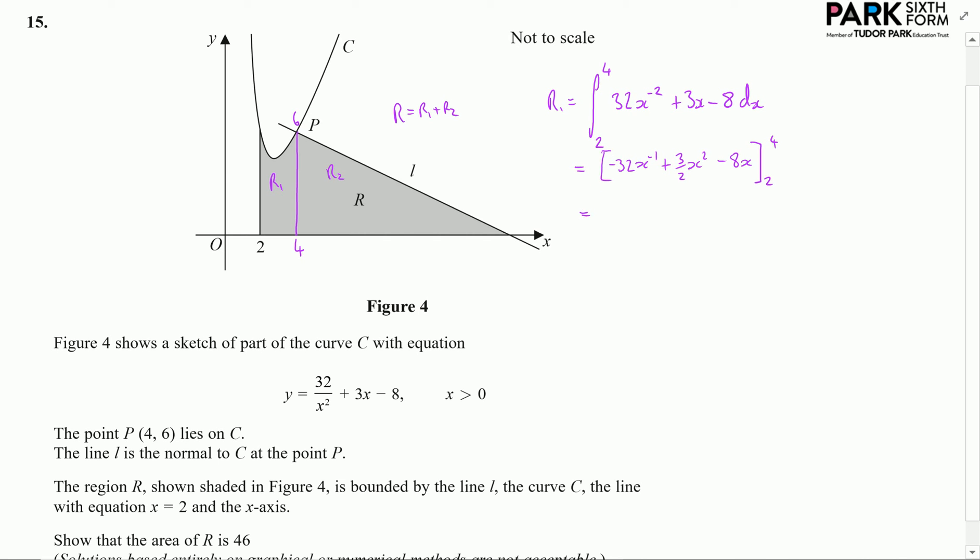So then substitute in these values. That's going to be minus 32 over 4, plus 3 over 2 lots of 4 squared, which is 16, minus 8 times 4, which is 32. And from that I subtract minus 32 over 2, plus 3 over 2 lots of 2 squared, which is 4, minus 8 times 2, which is 16.